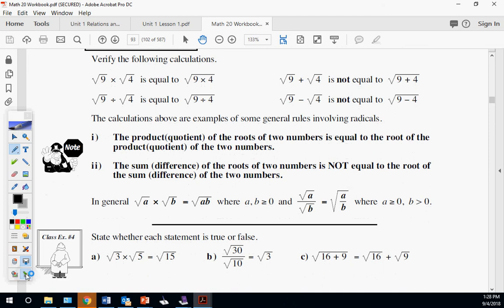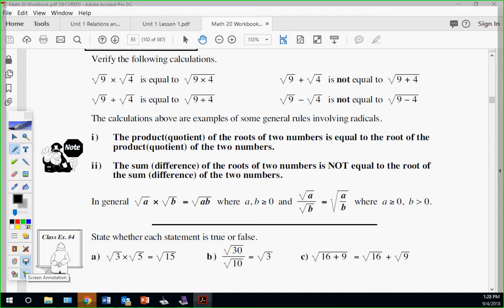Combining radicals - some quick things to prove operations. Root 9 times root 4: what's the square root of 9? 3. Square root of 4? 2. 3 times 2 is 6, right? 9 times 4 is 36. What's the square root of 36? 6. This one's good, that's true. Root 9 times root 4 is the same as root of 9 times 4. Now division: square root of 9 is 3, square root of 4 is 2, so that's 3 halves. 9 divided by 4, square rooted, is the same thing because you square root top and bottom. Both check out.